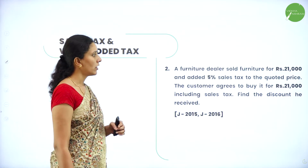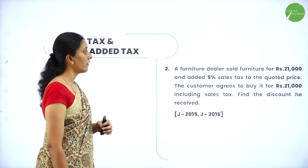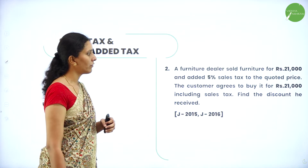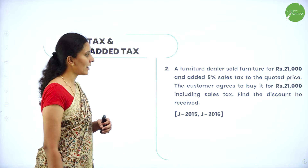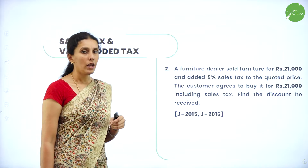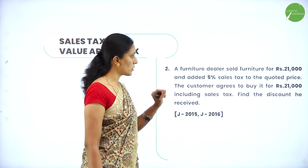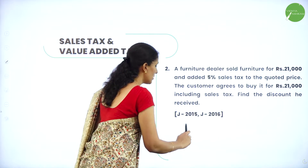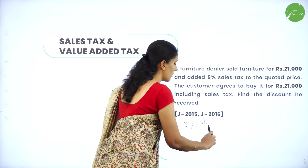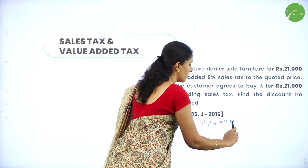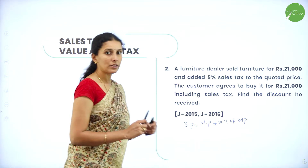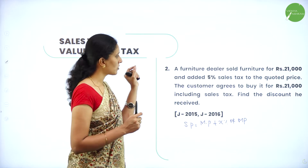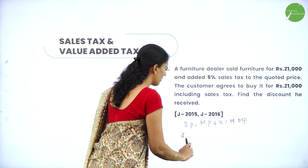Next question: a furniture dealer sold furniture for rupees 21,500 and added 5 percent sales tax to the quoted price. The customer agrees to buy it for rupees 21,000 including sales tax. Find the discount amount received. Here, if the customer agrees to pay rupees 21,000, the selling price inclusive of tax is 21,000. We do not know the exact market price of the furniture, so let us find it.